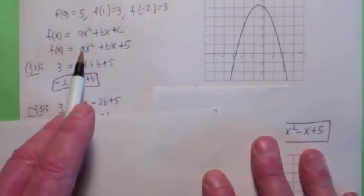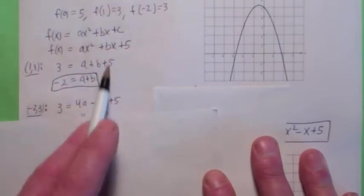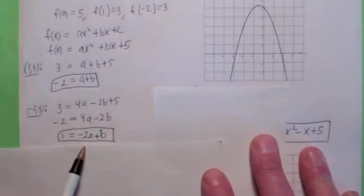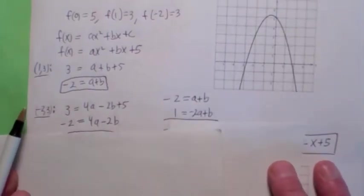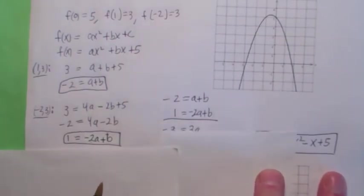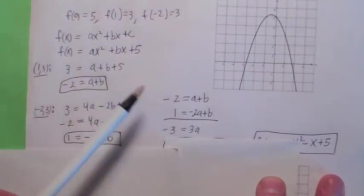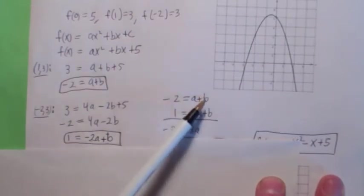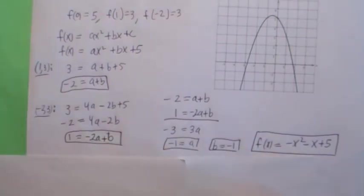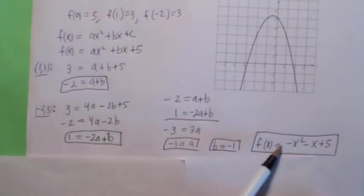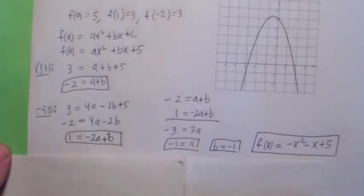Plugging in (−2, 3): x = −2 gives 4a − 2b + 5 = 3, and after subtracting 5 and dividing by −2 you get −a + b = 1 — wait, let me restate: you get 4a − 2b = −2, which simplifies to 2a − b = −1. Now subtract the first equation (a + b = −2) from this: you get 3a = −3, wait — subtracting gives a = −1. If a = −1, then from a + b = −2, b = −1. So the function is f(x) = −x² − x + 5.